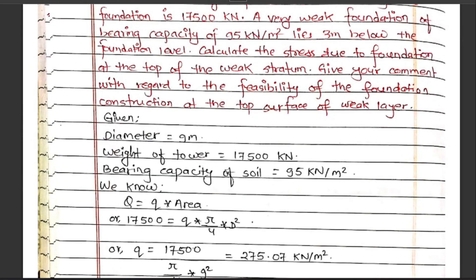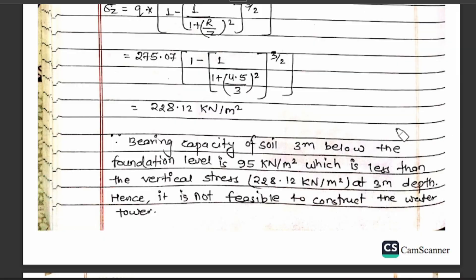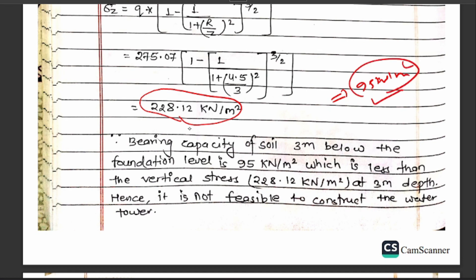With regard to the feasibility of the foundation: the vertical stress at the top of the weak stratum is 228.12 kN per meter square, while the bearing capacity of the soil 3 meters below the foundation level is 95 kN per meter square. Since 95 kN/m² is less than the vertical stress of 228.12 kN/m² at 3 meter depth, it is not feasible to construct the water tower at this location.